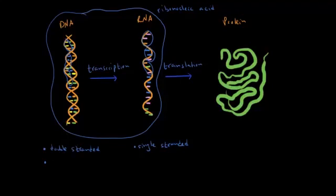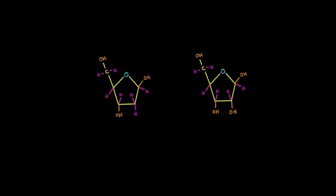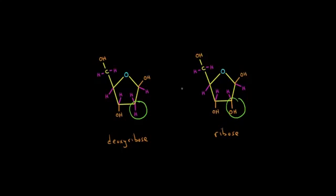Another difference is that the sugar in DNA is deoxyribose, while the sugar in RNA is ribose. They're pretty similar — the only difference is that in one spot, deoxyribose has just a hydrogen, whereas ribose has an OH group. So deoxyribose is missing an oxygen that would normally be found in ribose.